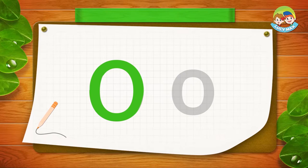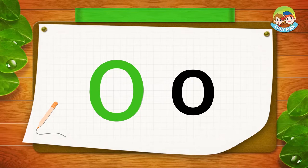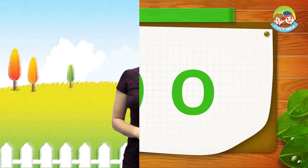Now, small o. It's the same as big O — you go down and around. That's small o. Now try to write big O and small o on your paper. The next letter we'll study is P.